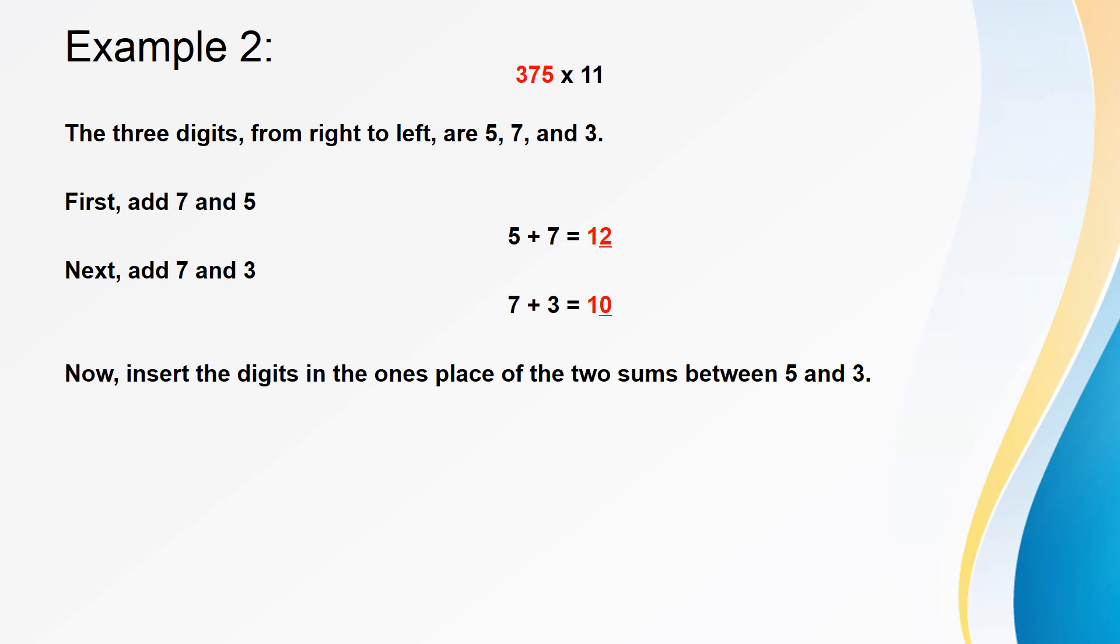Let's take the example as 375. Here, the digits moving from right to left are 5, 7 and 3. As before, add 7 and 5 which gives the sum as 12. Then, add 7 and 3 which gives the sum as 10. Now, insert the digits in the ones place of 12 and 10 between 3 and 5.